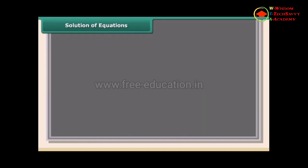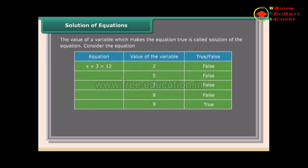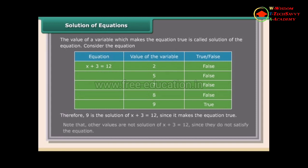The value of a variable which makes the equation true is called the solution of the equation. For example, 9 is the solution of x + 3 = 12, since it makes the equation true. Other values are not solutions of x + 3 = 12 since they do not satisfy the equation.